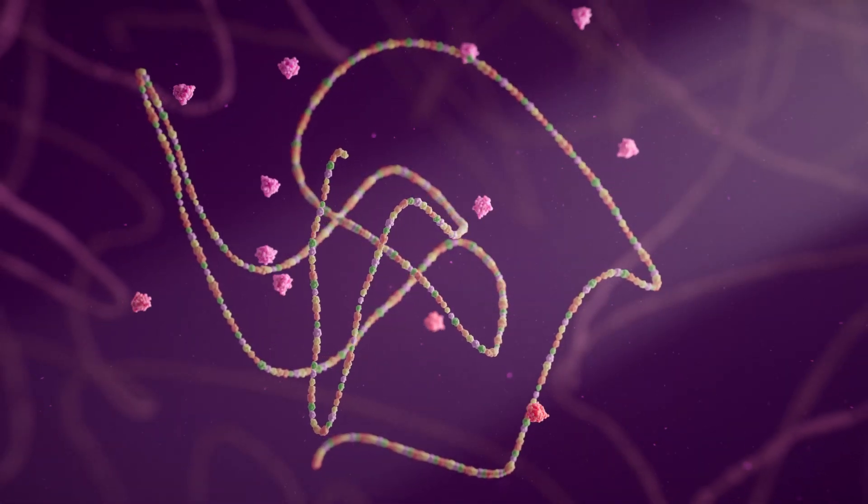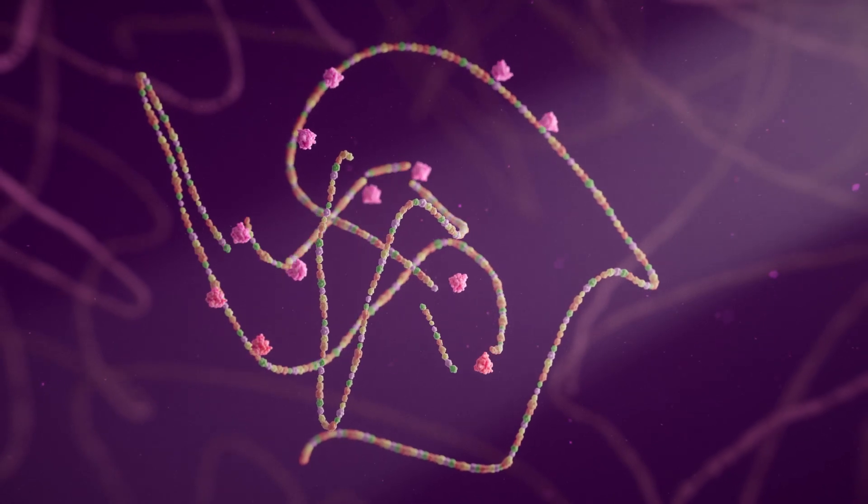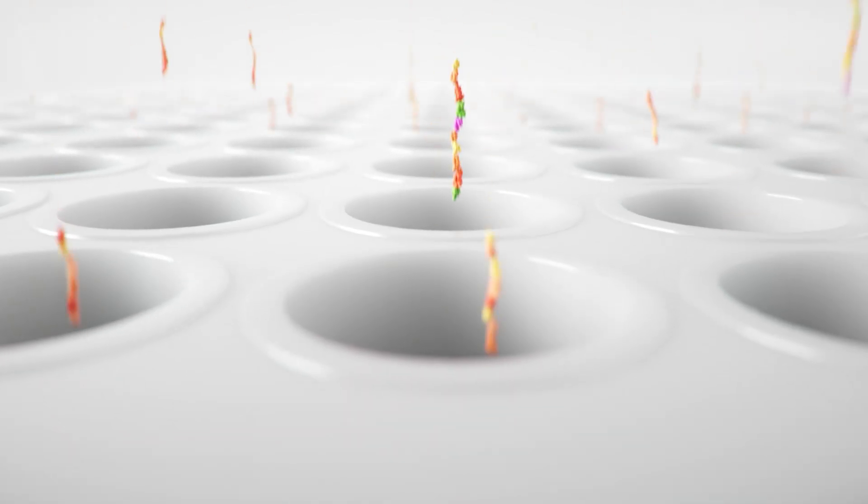To prepare samples for sequencing on Platinum Pro, proteins are digested into peptides. These peptides are then functionalized and immobilized onto a semiconductor chip.